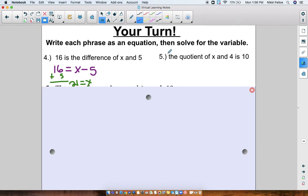Number 5 over here, the quotient of x and 4. Well, quotient means division, so I know that this is going to be x divided by 4. So here we have x divided by 4 equals 10. To solve this, we're going to use the inverse of division, which we know is multiplication. We're going to multiply by 4. 10 times 4 is 40. So we know that x equals 40. So there's our other two examples.